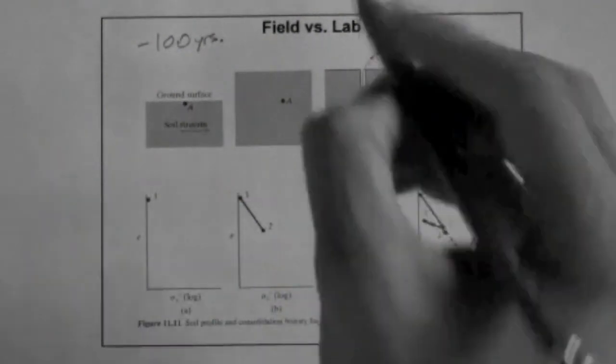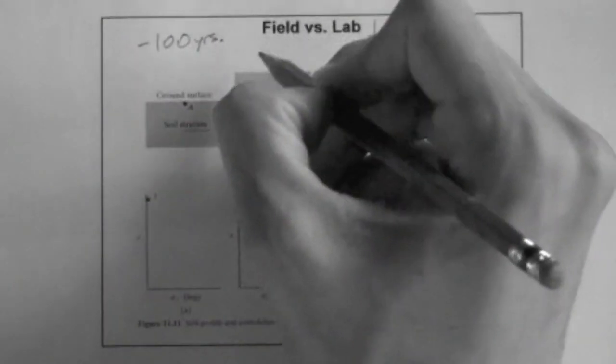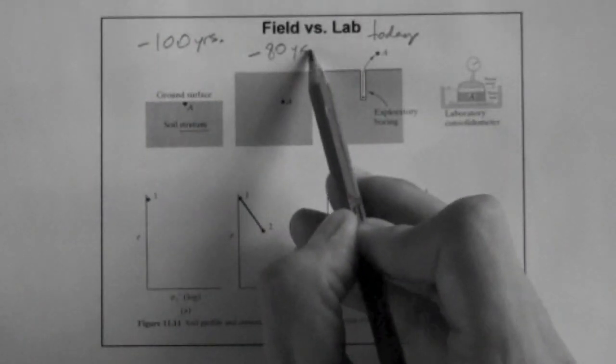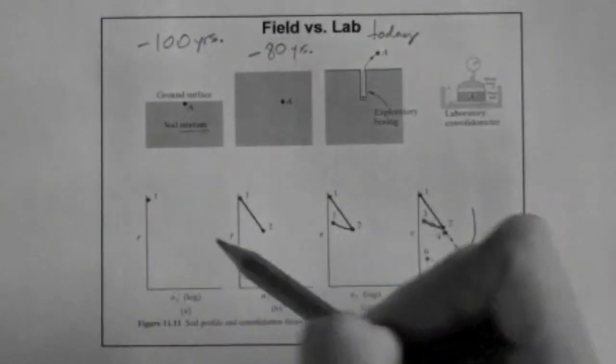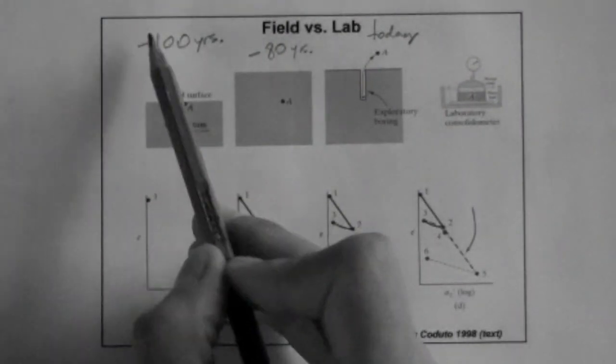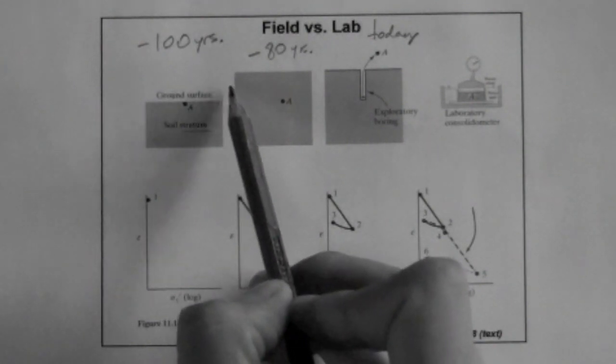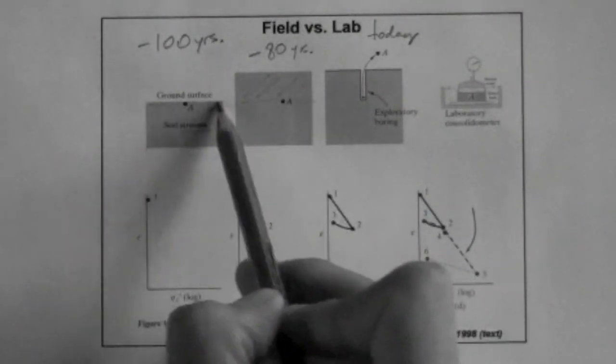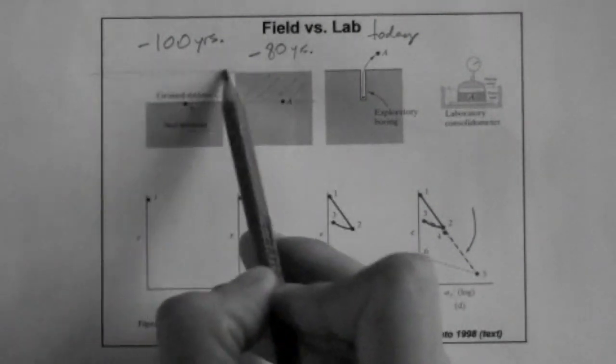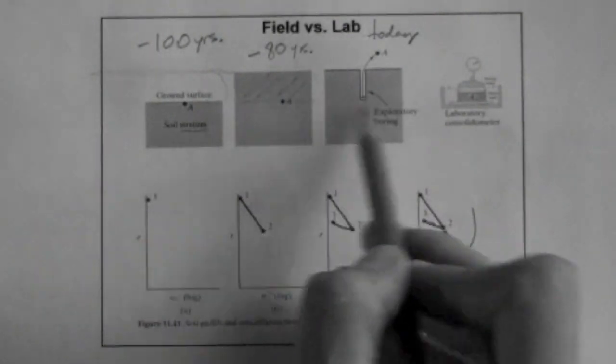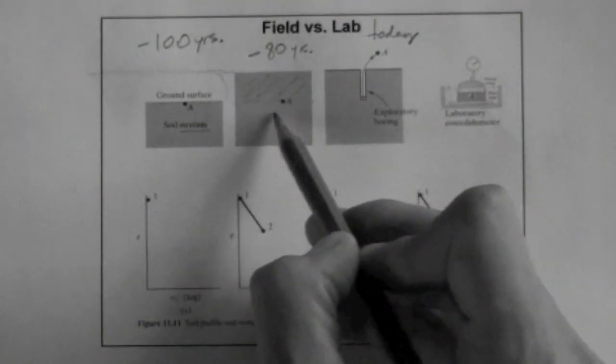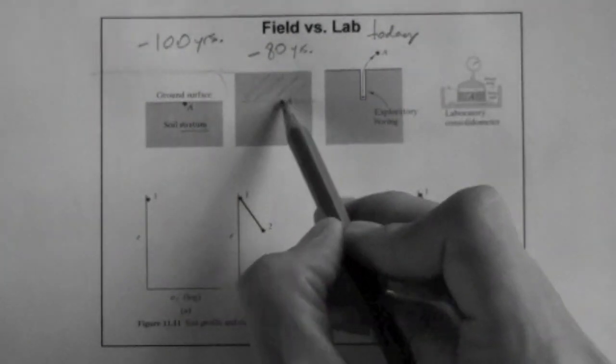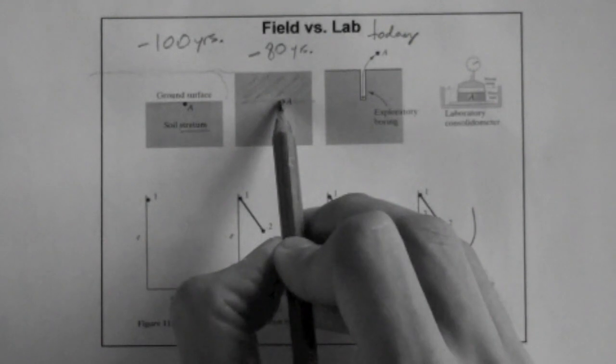Okay, 20 years after this situation here, that is minus 80 years ago, there was a landslide somewhere that led to the accumulation of soil above the ground surface. So now the profile looks like this, there's some soil that is above this point.